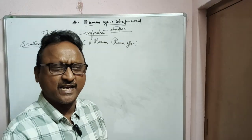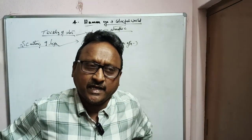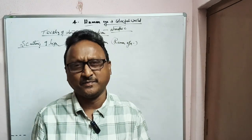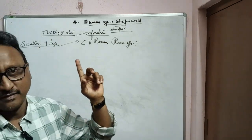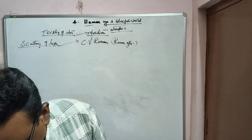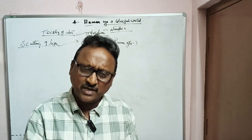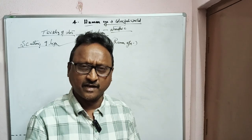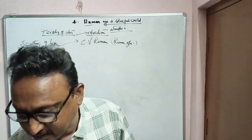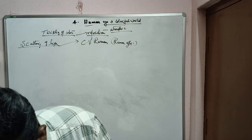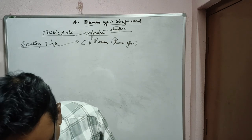Why is the sky blue? Even the deep sea appears light blue in color. This is because of the scattering of light. Similarly, the reddish color at sunrise and the orange color at sunset are also due to the scattering effect.